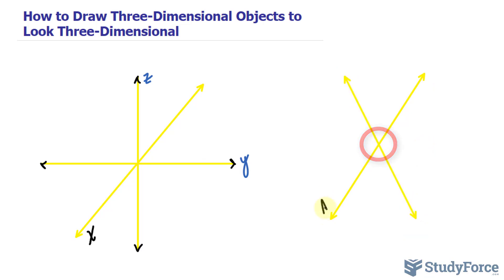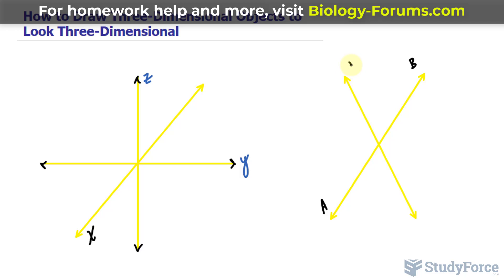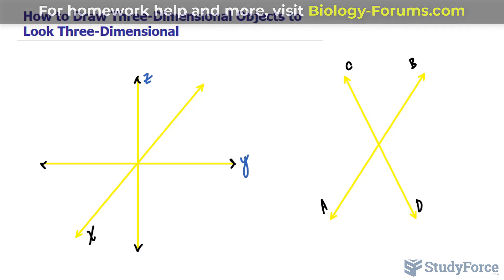If we call this line AB and this line CD, and I want line CD to be portrayed underneath AB, you can show that by erasing part of CD so that AB is visibly in front of CD.